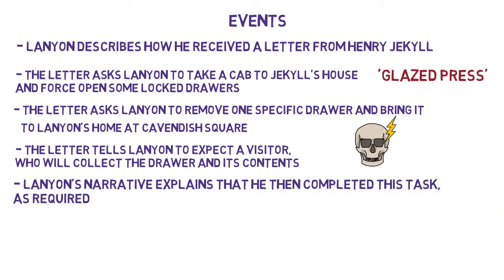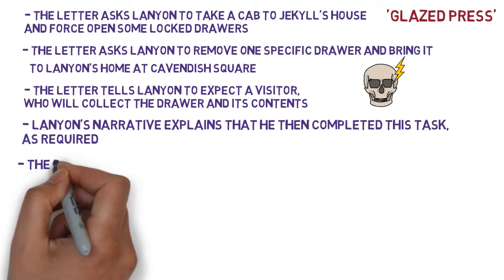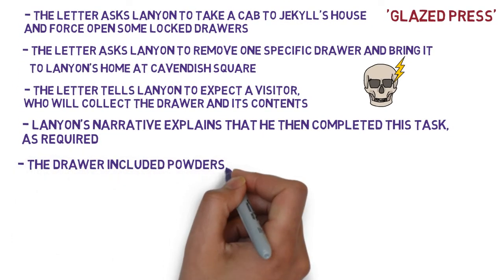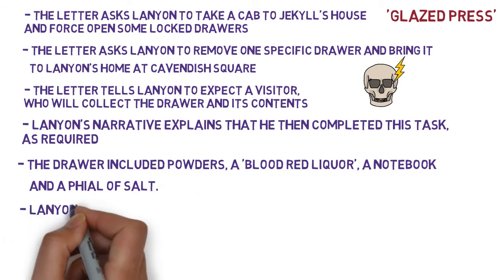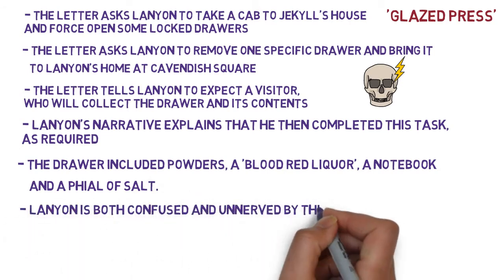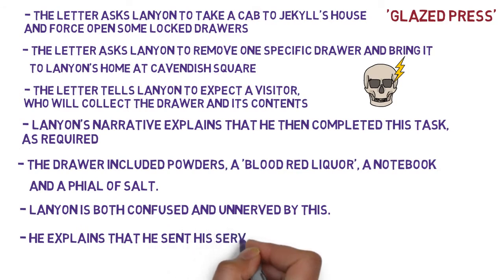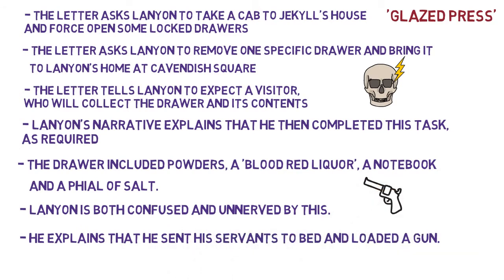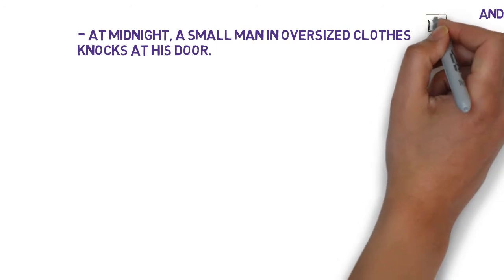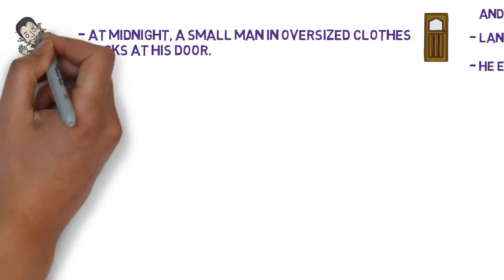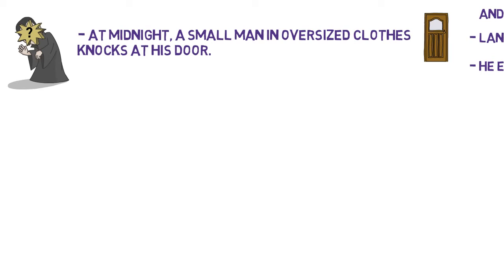Lanyon's narrative explains that he inspected the contents of the drawer, and among them he found powders, a blood-red liquor, a book full of dates and brief remarks, and a vial of salt. Lanyon is both confused and unnerved by this. He explains that he sent his servants to bed and loaded a gun. At midnight, a small man in oversized clothes knocks at his door. Lanyon finds him distasteful to look at, and despite the man's oversized clothes, Lanyon is not drawn to laughter in any way.